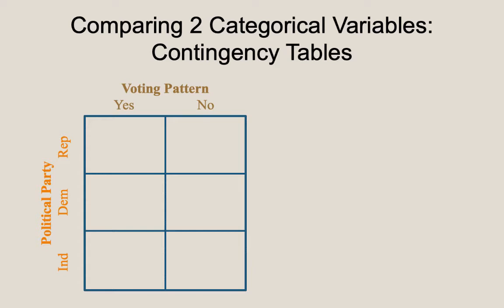We would record in this table numbers representing how many people we observed who fell into each of these categories. Any one person will have a value for each variable — a voting pattern response of yes or no, and a political party response of Republican, Democrat, or Independent. There are two variables: voting pattern with values yes or no, and political party with values Republican, Democrat, or Independent. In this sample, these are the only three parties observed.